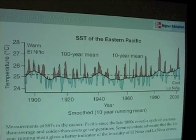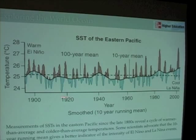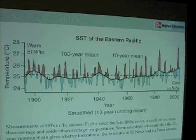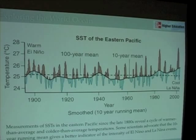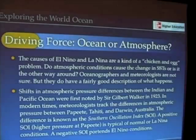This gives you some idea of the periodicity. You can see that you might have three to six to nine El Niños in a given decade or two — an interdecadal variability. Or if you prefer, multi-annual, happening every few years. We have El Niños and La Niñas, and this figure tells you that.